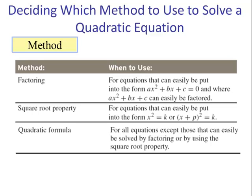Deciding which method to use to solve a quadratic equation. We have looked at three methods. Factoring is best to use when the quadratic can easily be put in the form ax² + bx + c = 0 and it can be easily factored.